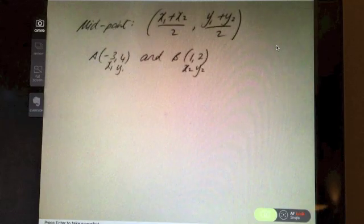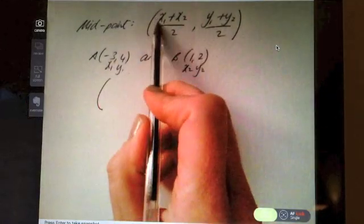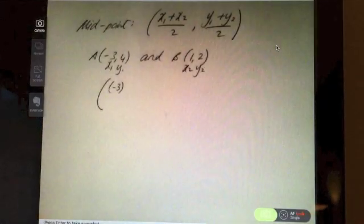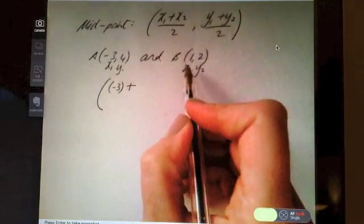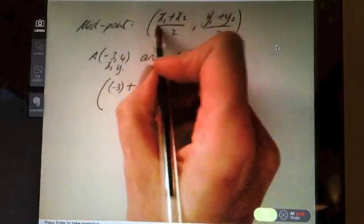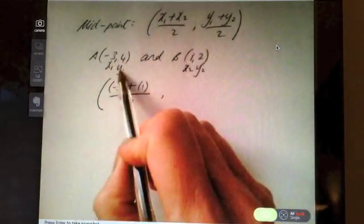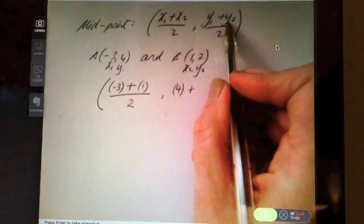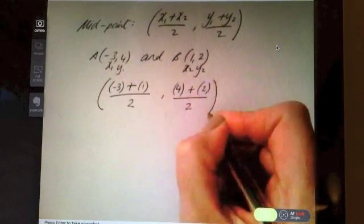Now let's sub into our formula. Follow the formula exactly. You've got a bracket, then x1, sub it in, keep brackets around it. Then plus, then we have x2 which is 1 in this case. Then our division line and then 2. Comma, then y1 which is 4, put it in brackets. Then plus, y2 which is 2, divide by 2 just like in the formula.